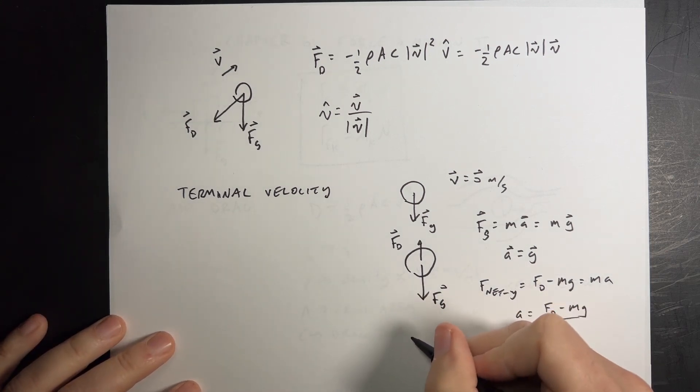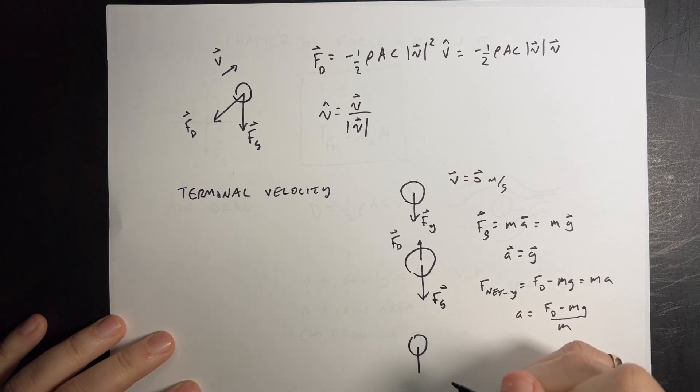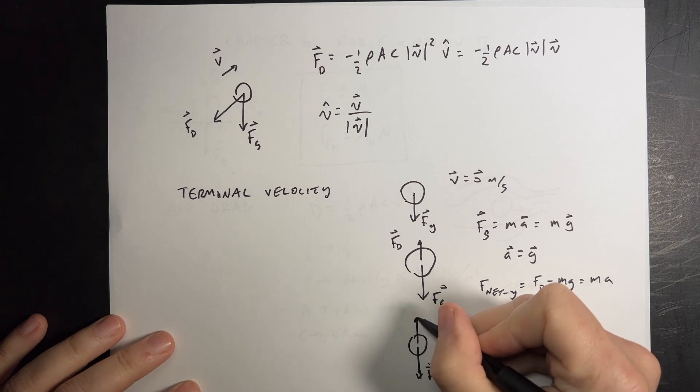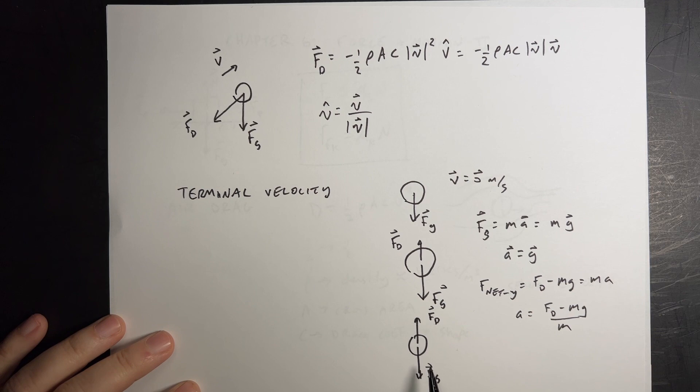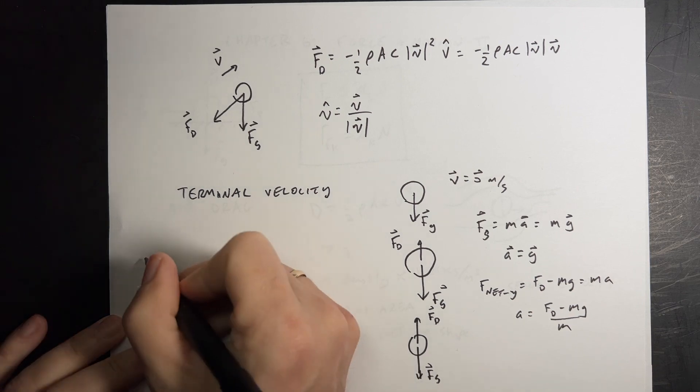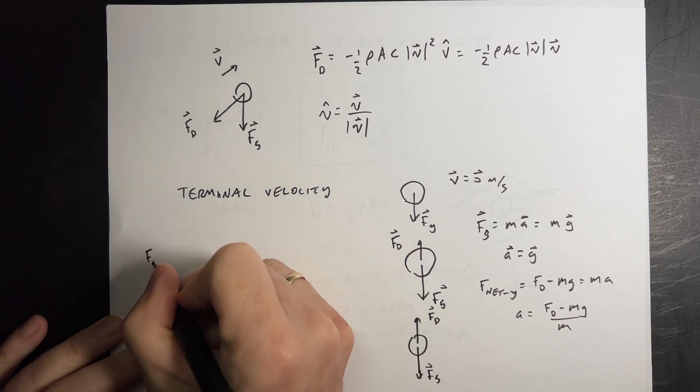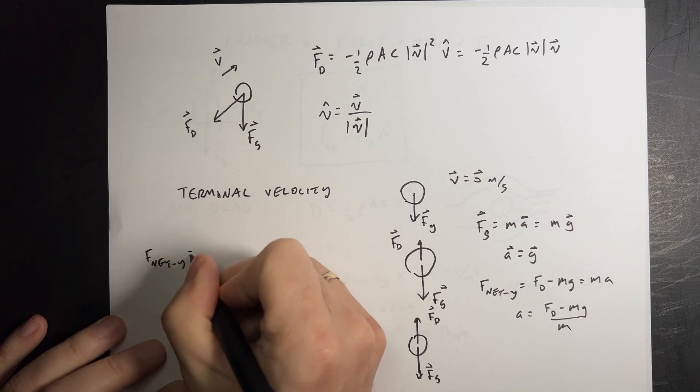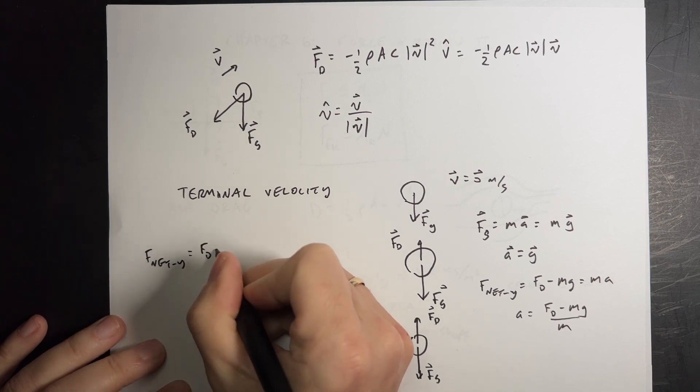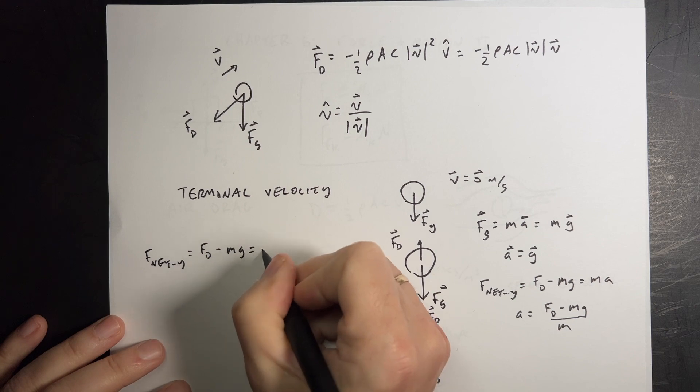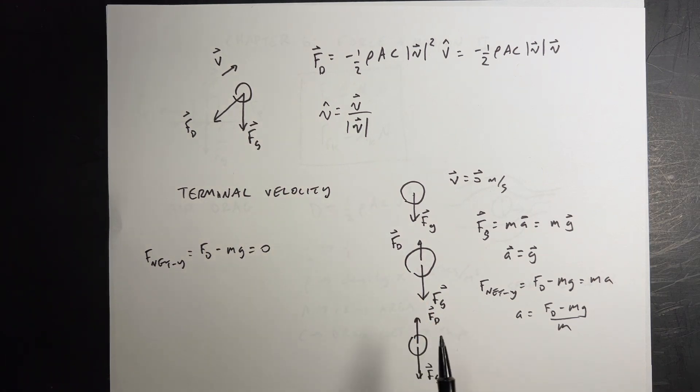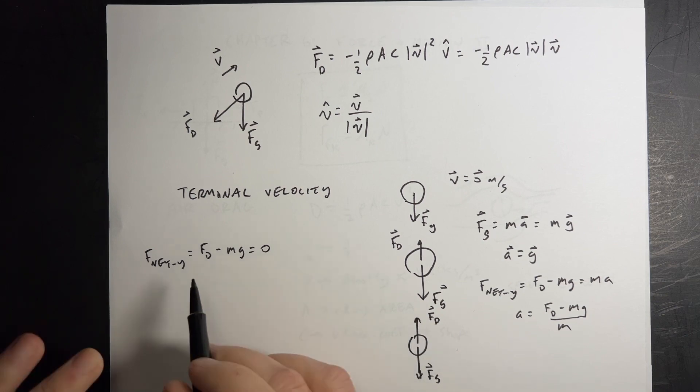Eventually, it will get to the point like this. I'm running out of room, but I'm going to draw it anyway. I have my gravitational force. Eventually, the drag force will equal the gravitational force. And at that point, the acceleration will be zero. So F net Y is going to be FD minus MG equals zero. It's eventually going to stop at the point where this force is equal to that force, and the net force is zero.